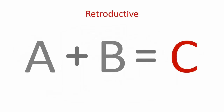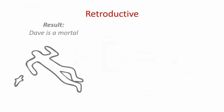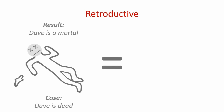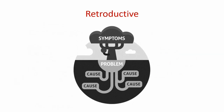Now let's focus on what A plus B equals C means in a research study that follows the retroductive approach. A is a result, B is a case, and C is cause. Let's check in with Dave — what happened to Dave? We've established that Dave indeed was a mortal, because he is now dead. From a retroductive perspective, we are really interested in understanding what killed Dave. The retroductive researcher aims to understand why things are the way they are — the causes of what they are observing. This could be derived by using both inductive and deductive research approaches.